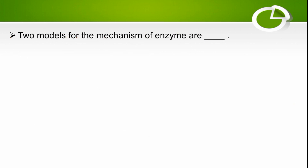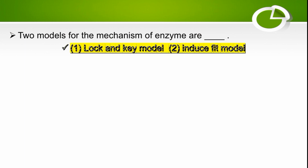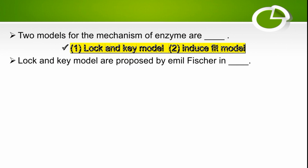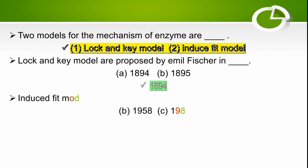The two models for the mechanism of enzymes are the lock and key model and the induced fit model. These are the most important models representing the mechanism and function of enzymes. The lock and key model was proposed by Emil Fischer in 1894.